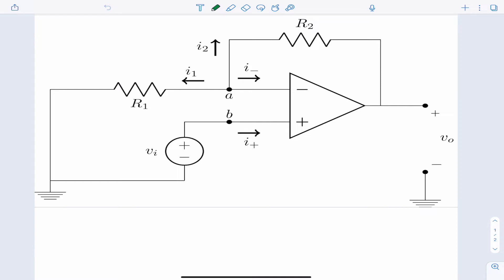So a great place to start is to put in the ideal op amp assumptions. Let's just do that. It'll make the circuit much nicer to deal with. So the ideal op amp assumptions play out like this: the currents into the op amp I minus and I plus are both zero. The voltage between the minus and plus terminals is zero.